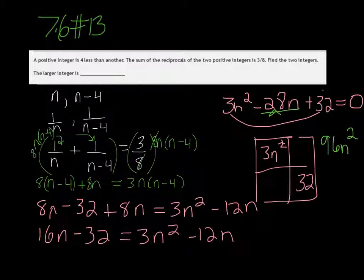So I found it. It's going to be negative 24n and negative 4n. If you add those up, it equals negative 28n. And if you multiply them out, it's 96n squared.